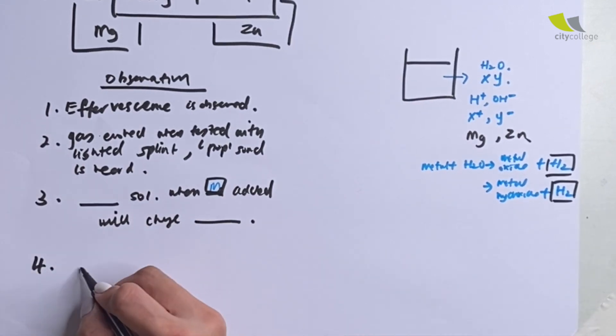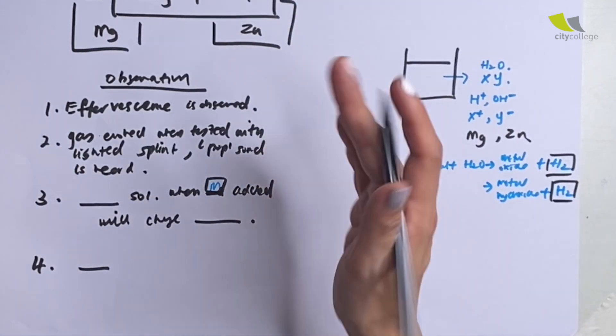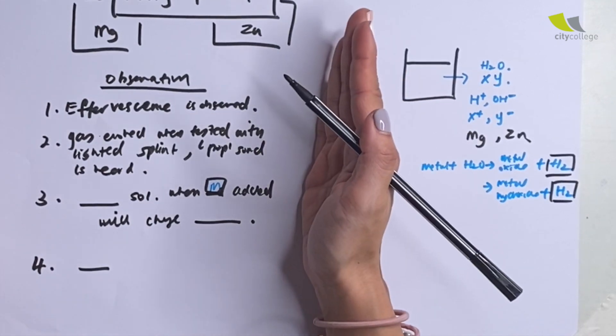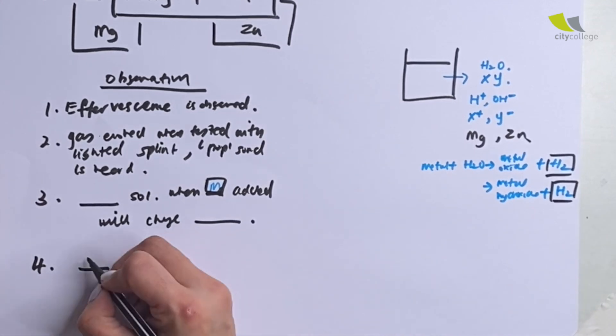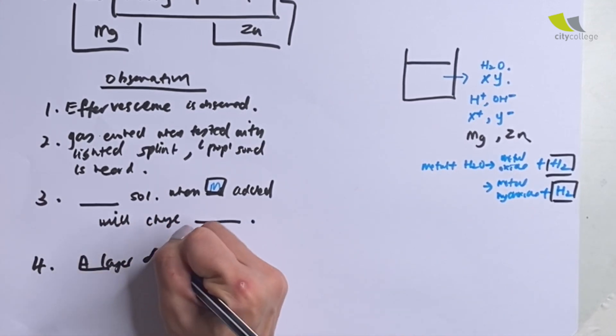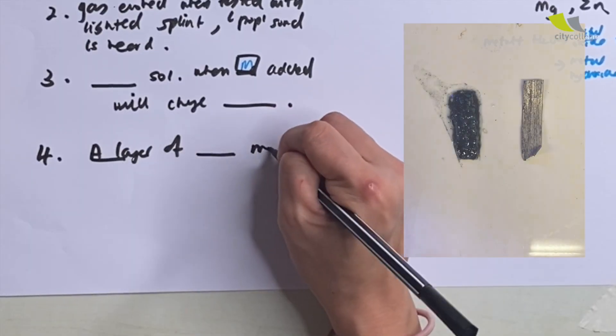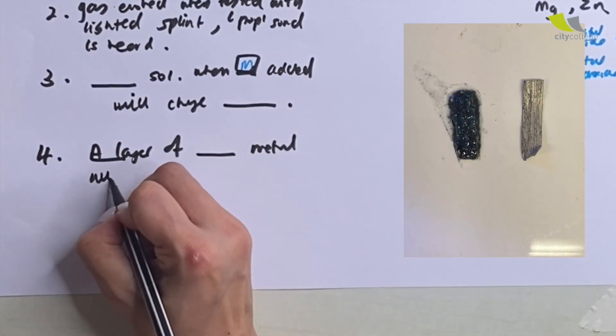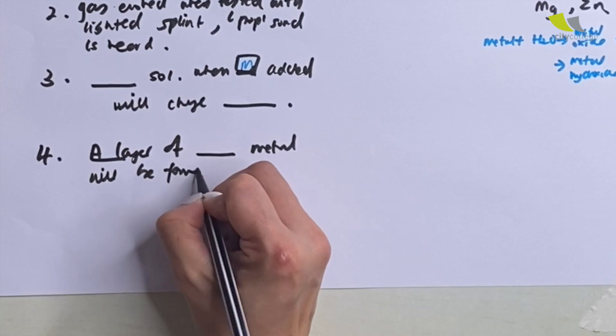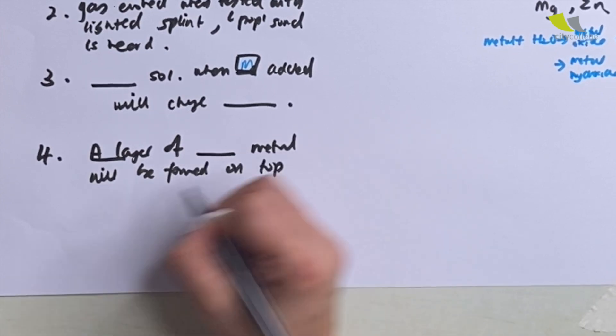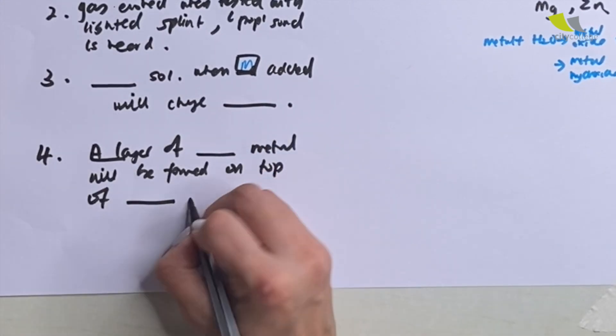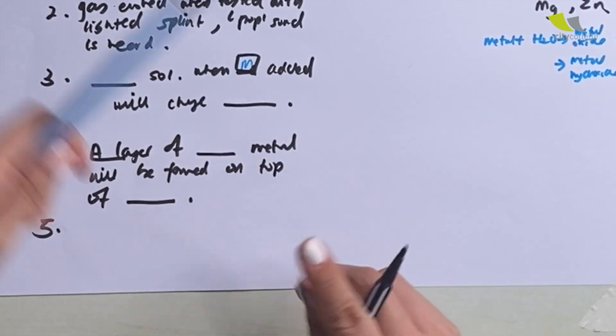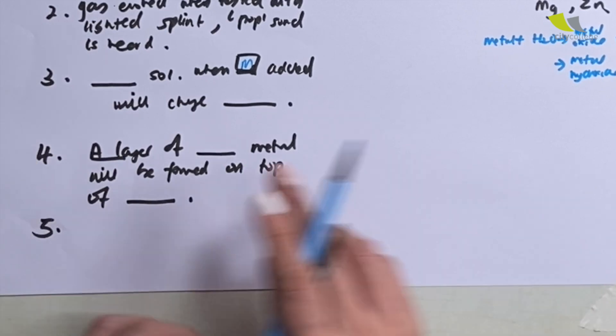Next, this, by now, you will know this is a displacement reaction kind of chemical reaction. So you must write down a layer of what color metal will be formed on top of the whatever metal that you are added. That is the next, number four.